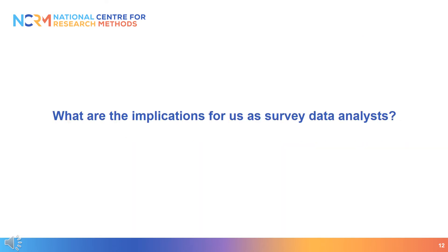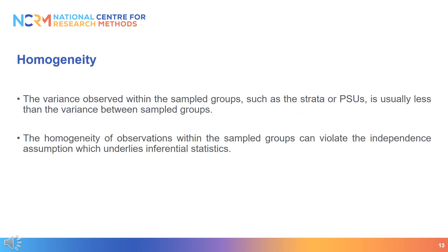Complex sample data have been designed this way by survey data collection experts for very good reasons. But what implications does this have for us as survey data analysts? One issue is that complex samples can create homogeneity in the sample. Where samples are collected using multi-stage stratified sampling techniques, it is possible that the variance observed within the sampled groups — such as the strata or PSUs — is less than the variance between sampled groups. Individuals within strata are likely to be more homogeneous or similar than individuals selected via a simple random sample. The homogeneity of observations within sampled groups can violate the independence assumption which underlies inferential statistics.